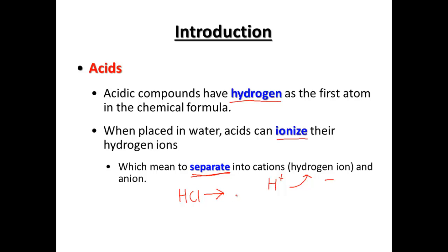HCl can separate when dissolved in water into the hydrogen ion plus a negative anion. So HCl separates into H⁺ and Cl⁻ — it's an ionic compound with plus and minus parts. Hydrogen at the start is going to be our cue for an acid.